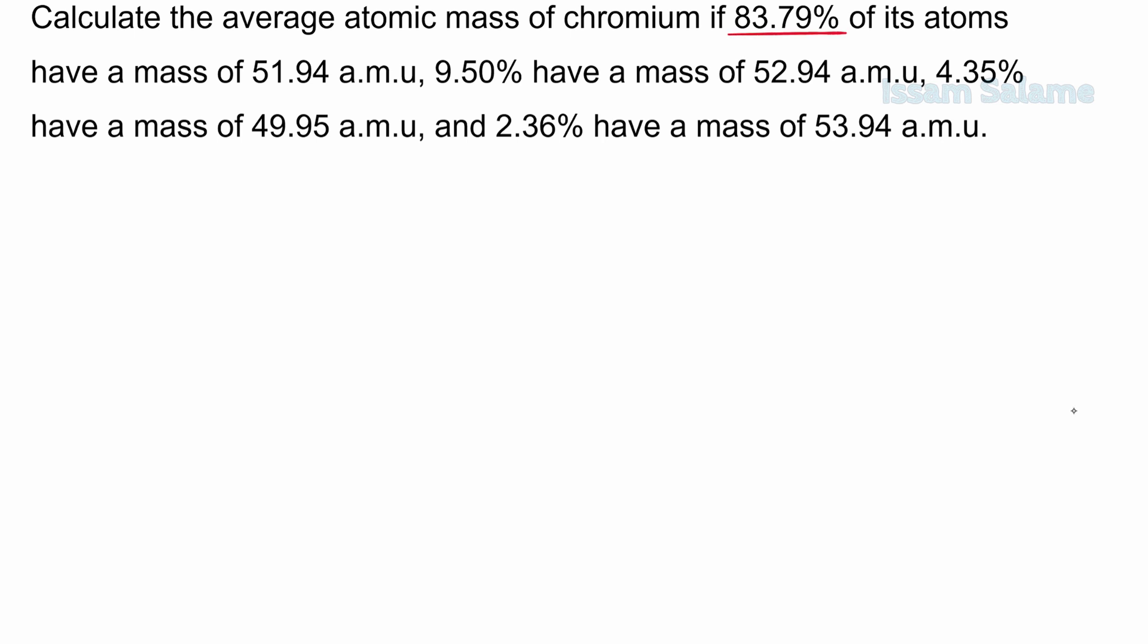The first one, its percentage of abundance is 83.79, and its mass is 51.94 amu. The second one, its percentage is 9.5, while its mass is 52.94.